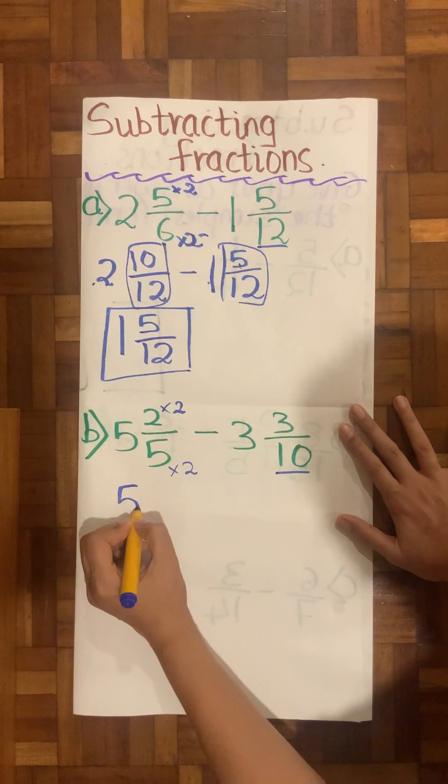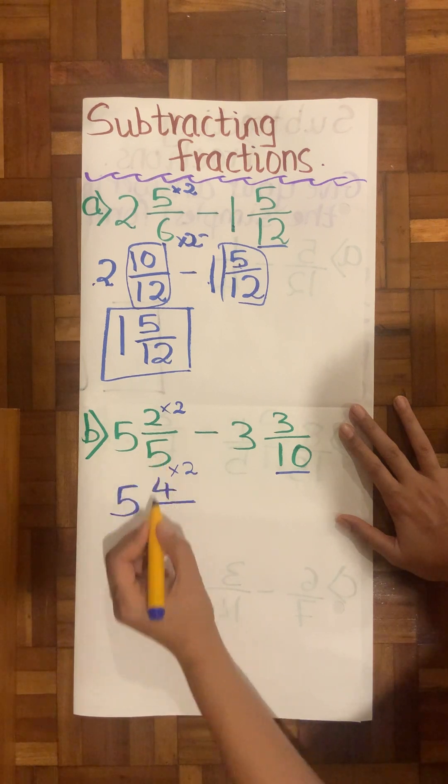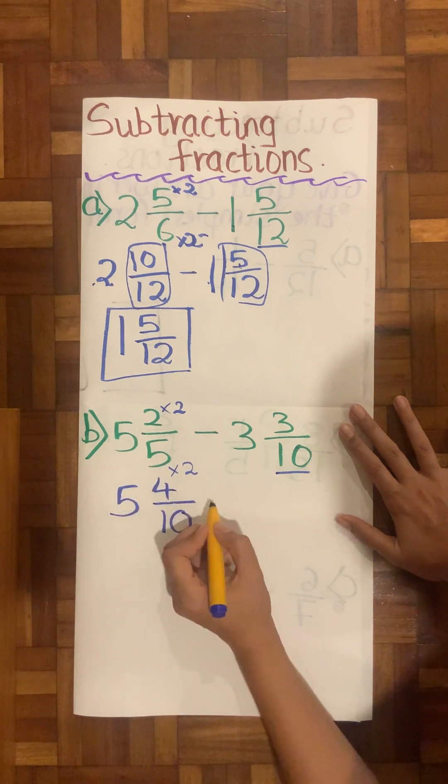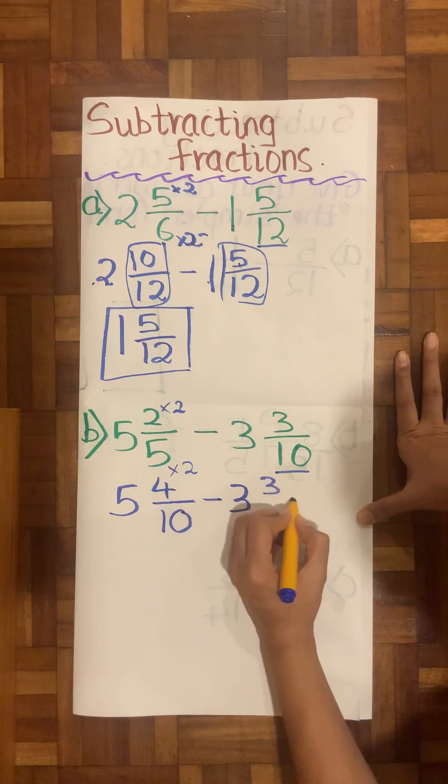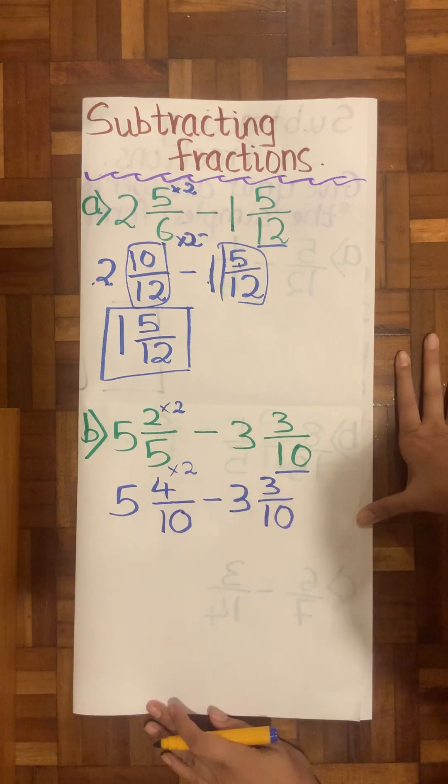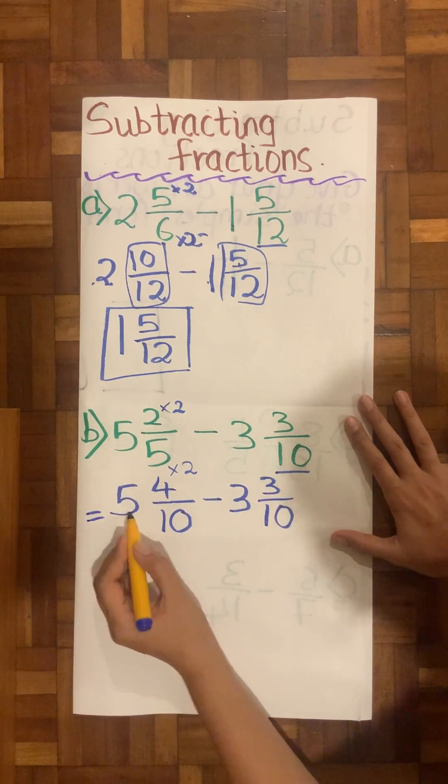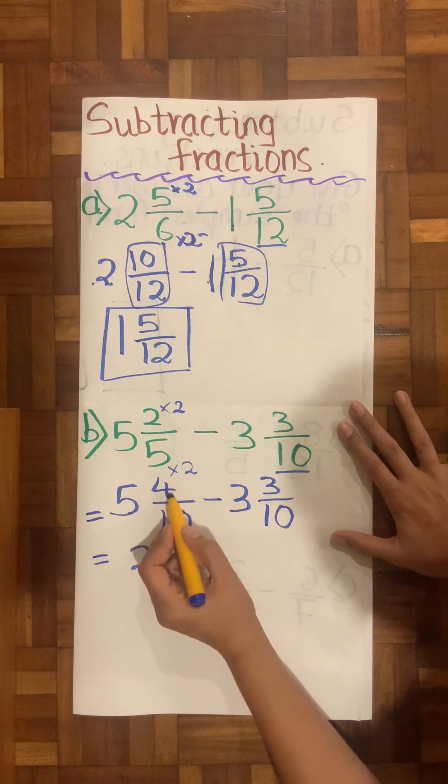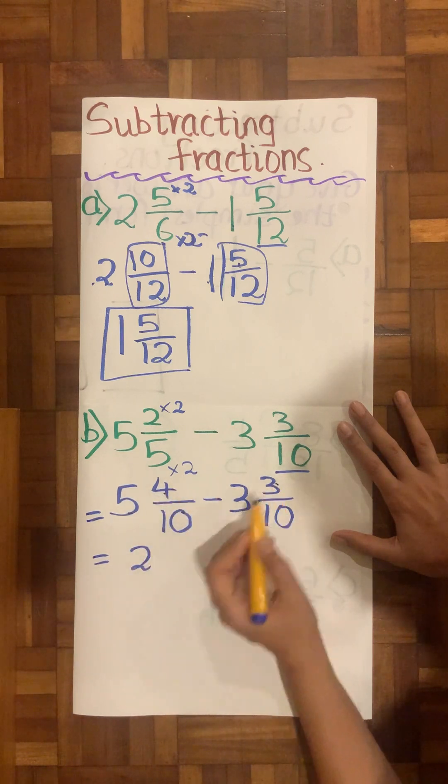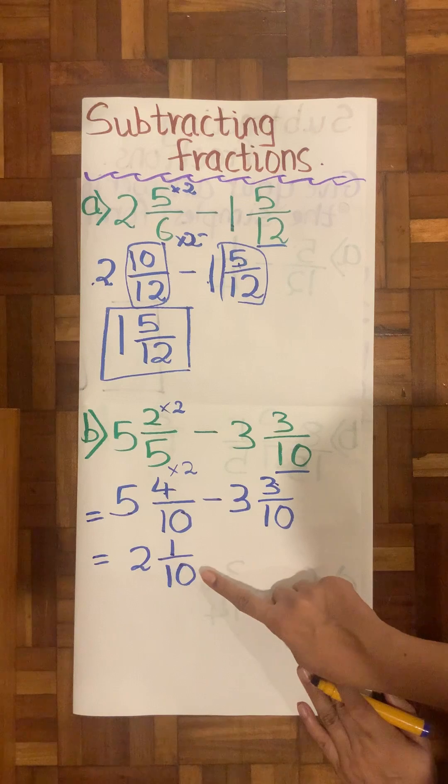The number that I multiply my denominator with is the same number I multiply my numerator with. So 5 is going to be the way it is. I will solve it. 2 times 2 is 4, 5 times 2 is 10, minus the 3 wholes and ³⁄₁₀. Now I will take my wholes. 5 minus 3 is 2. Let's deal with the fractions now. 4 minus 3 is 1 and ²⁄₁₀. So this is how I got my answer for the second one.